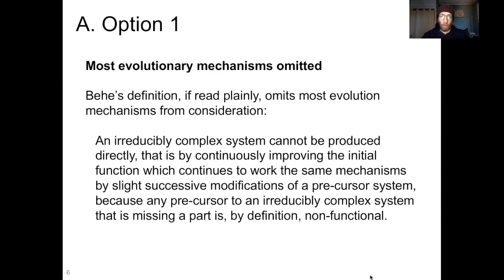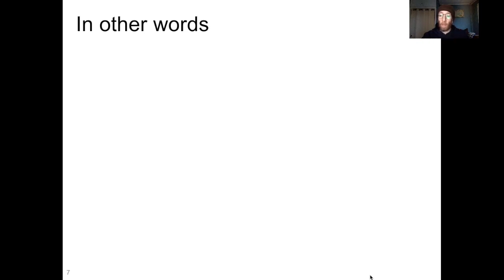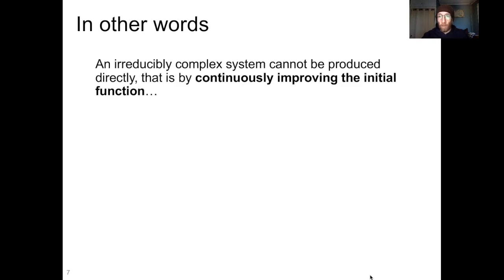Let's look at exactly what he is including and excluding. He wrote: "an irreducibly complex system cannot be produced directly — that is, by continuously improving the initial function, which continues to work by the same mechanisms, by slight successive modifications of a precursor system." Let's break this down, because this is really the crux of the matter. Going line by line: "by continuously improving the initial function" — we're going to pause right there, because there's a lot buried in those lines. What this is saying is we're assuming what's called a constant fitness landscape.